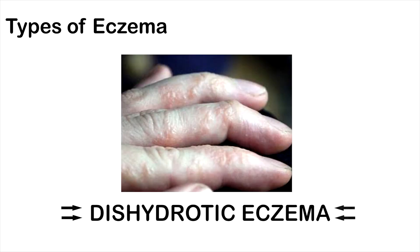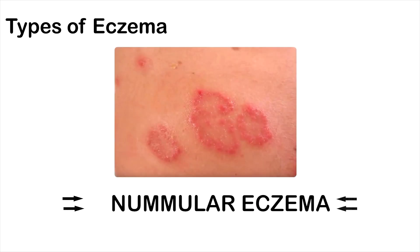The third type of eczema is Dyshidrotic Eczema. Here, tiny fluid-filled blisters appear on the palms and fingers with intense itching. The fourth type of eczema is nummular eczema, which is characterized by coin-shaped rashes appearing on the skin.